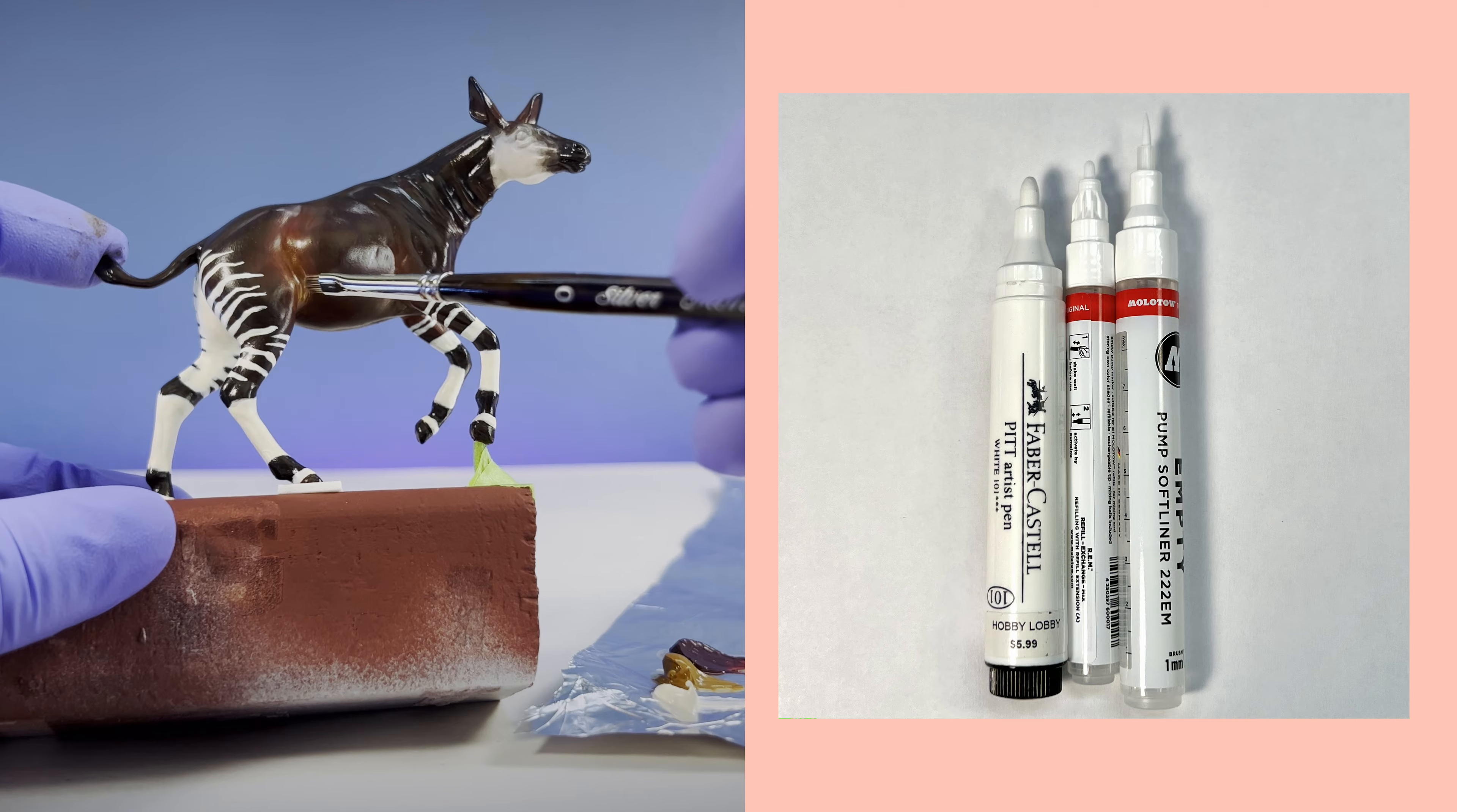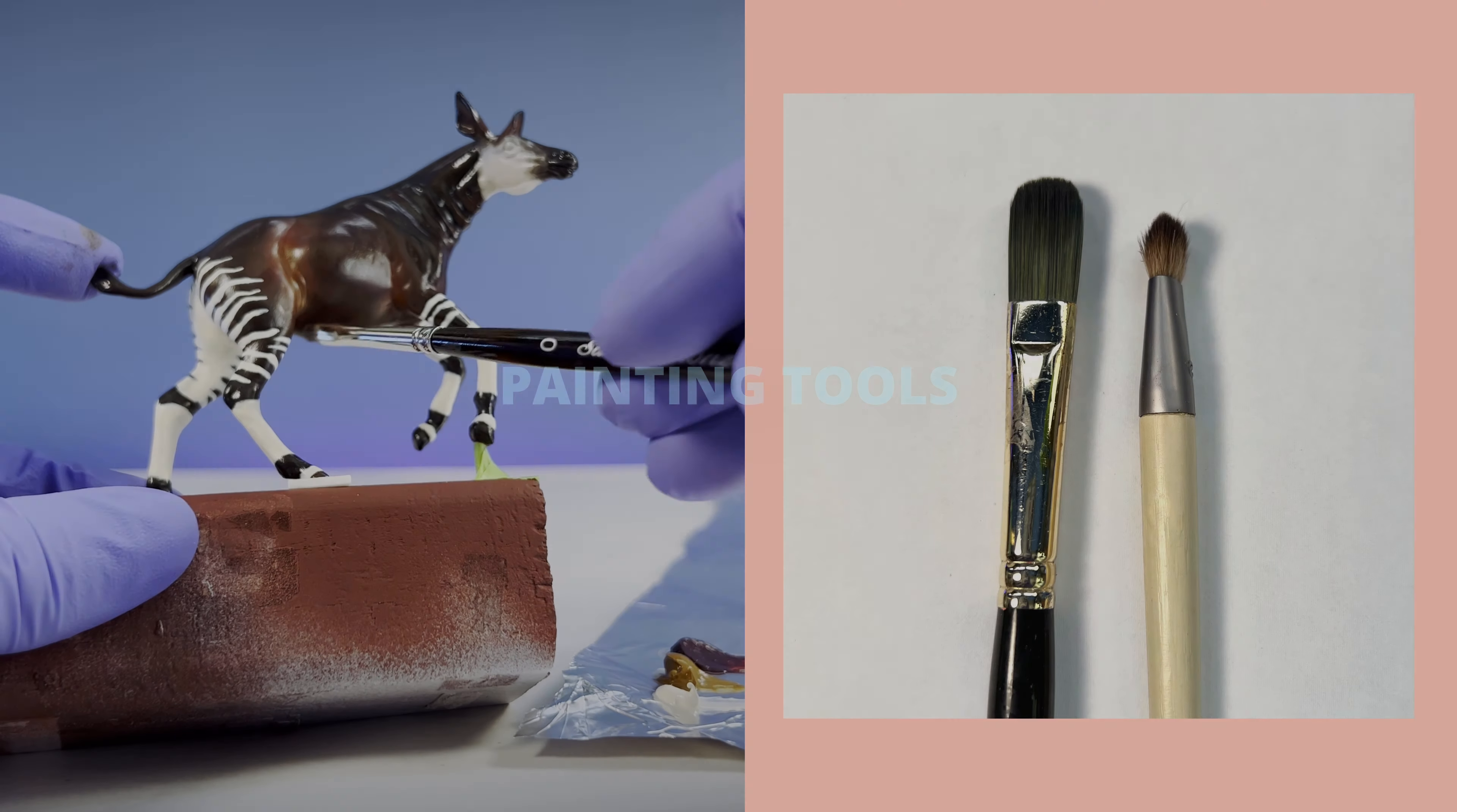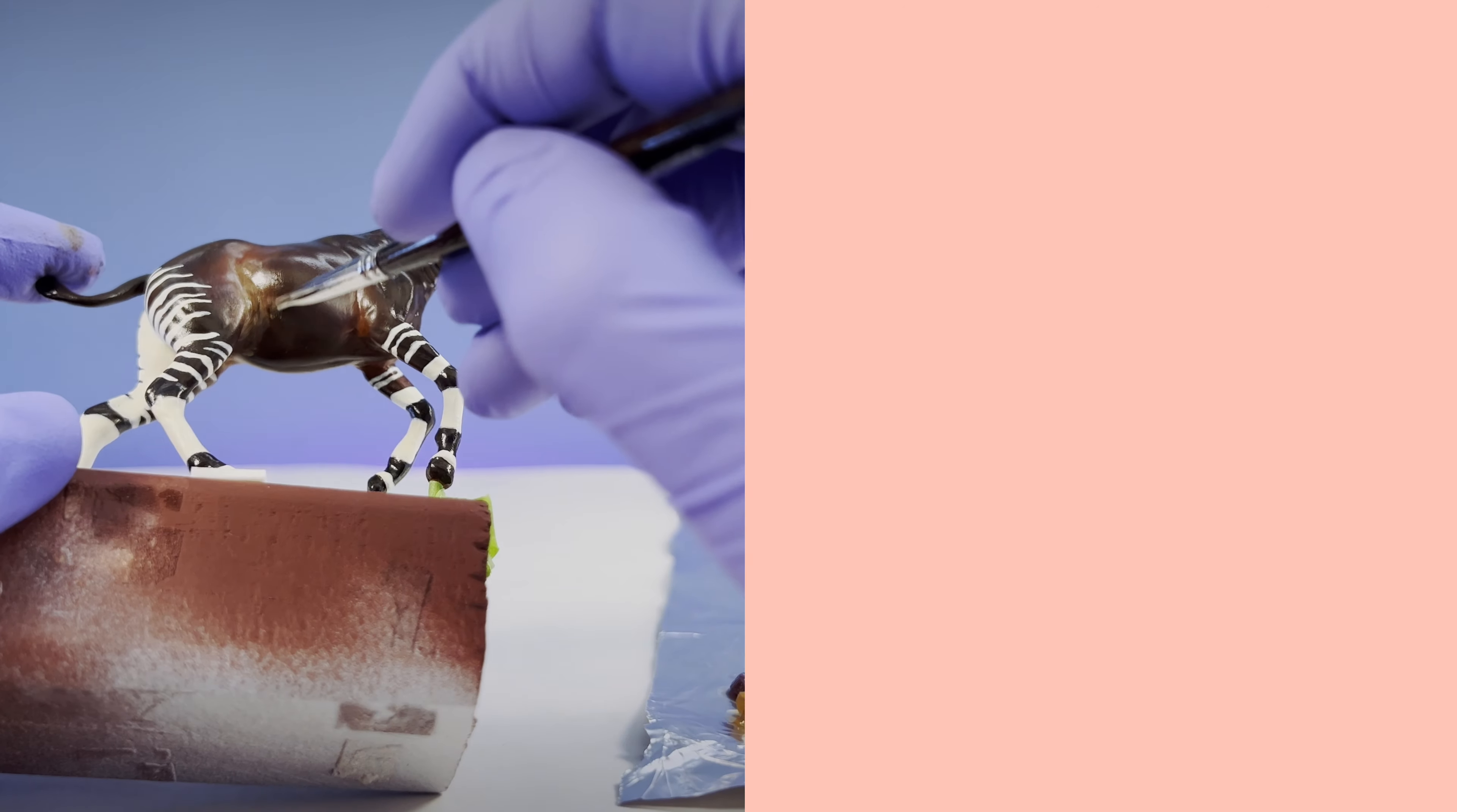You can also use markers, pens, or pencils to add details or effects. You can apply the paint with a soft brush, a spray can, an airbrush, or a sponge. It's personal preference, really.